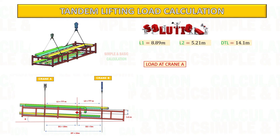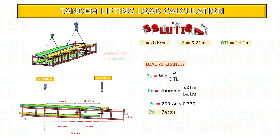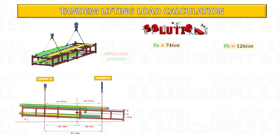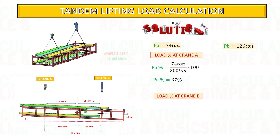Now, after getting the new distance of lifting point A and lifting point B to the center of gravity, start to calculate the load in each crane. The same formula will be used to get the load distribution in each crane. This is a sample to get the load percentage in each crane.